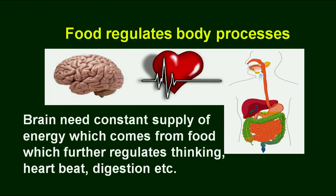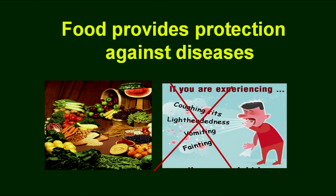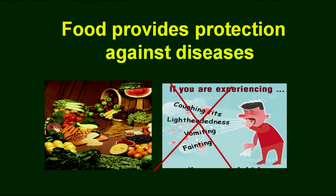Another purpose of food is the regulatory process. It is required for vital functions such as heartbeat, digestion, and thinking. The brain needs a constant supply of energy which comes from food, particularly glucose, which further regulates thinking, heartbeat, digestion, and other body functions. Food also provides protection against sickness or diseases — a variety of foods are needed in your diet to help protect your body from various symptoms, diseases, or deficiency disorders. A person may be feeling cough, lightheadedness, vomiting, or fainting, but if they had eaten a good amount of food or a balanced diet, this might have been prevented.